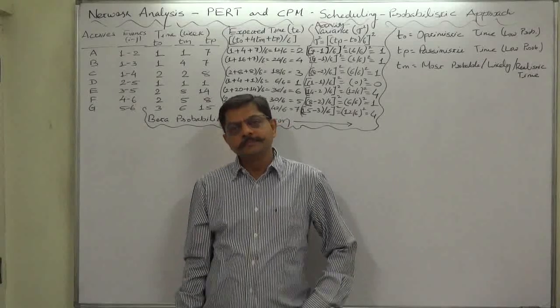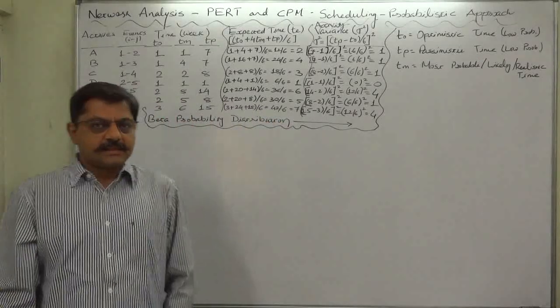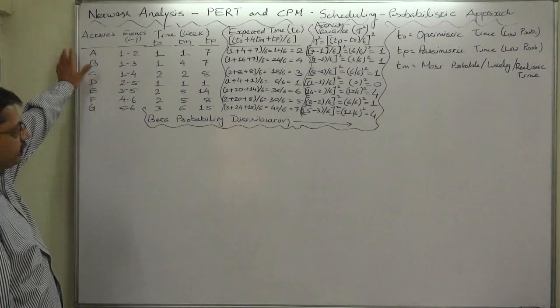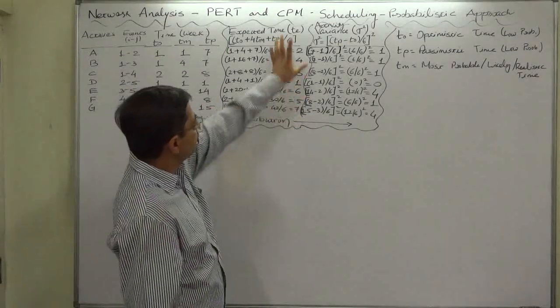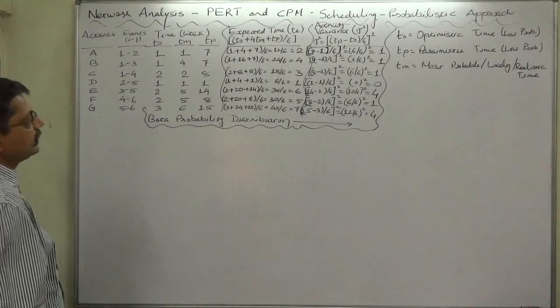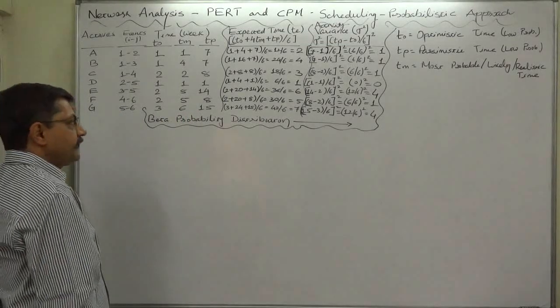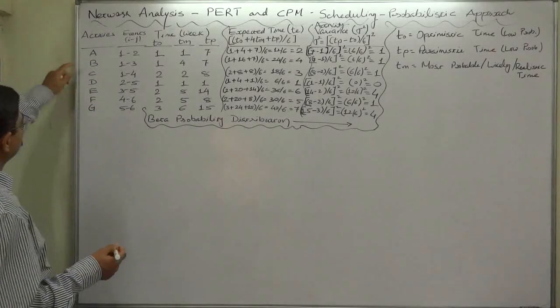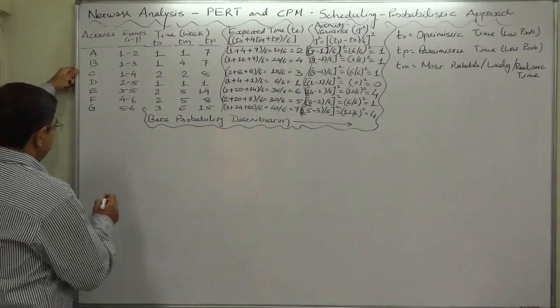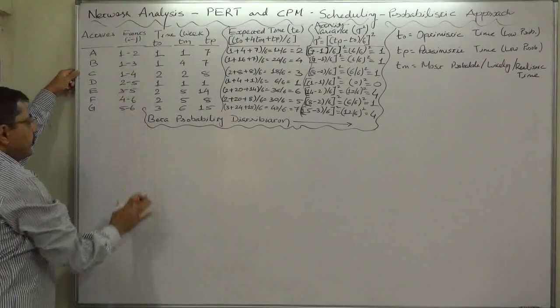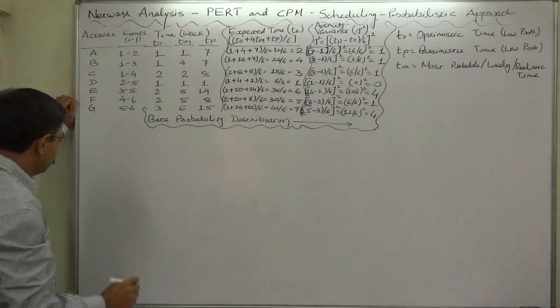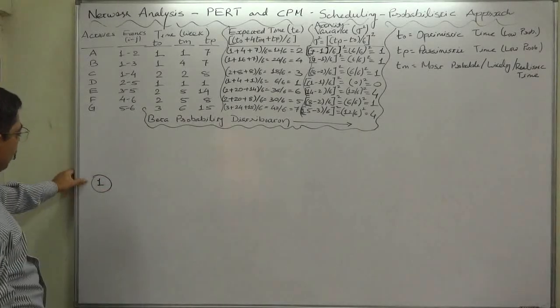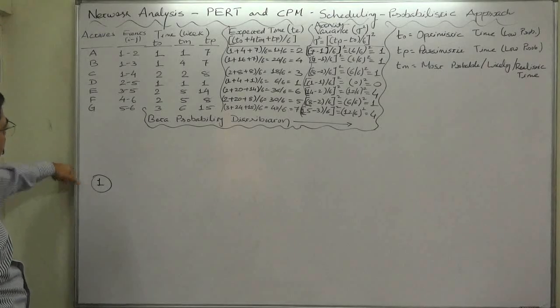Hello, namaskar and welcome. Let's draw a network or PERT chart for this project taking the expected time as the duration of the activity. Now we have seven activities and we have also the event numbers or node numbers, so it will be very easy to draw the diagram.